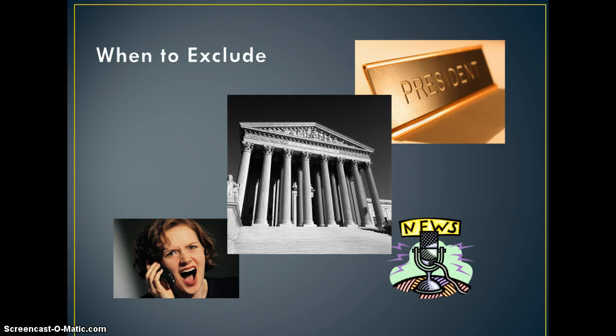The question then becomes when to exclude someone as a stakeholder. It is always difficult to limit the number in a stakeholder group, but it must be done. The stakeholder list should be manageable. You likely need to get everyone together in one place many times in order to make progress on the management plan. It is not a good idea to exclude those with influence over whether and how the decision is executed — for example, politically connected groups or those that by their participation demonstrate that you received broad-based input on a controversial decision.